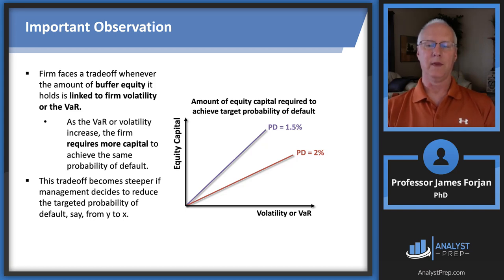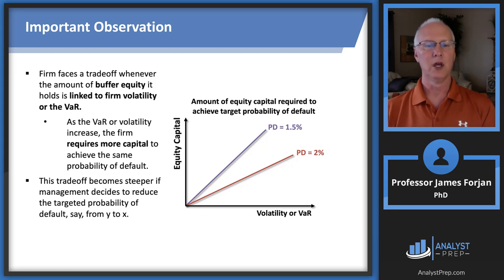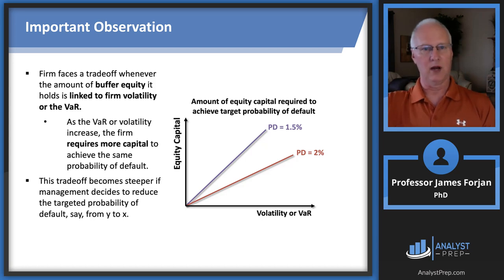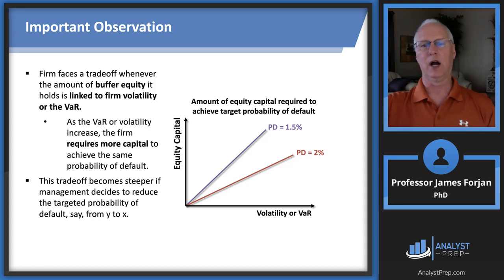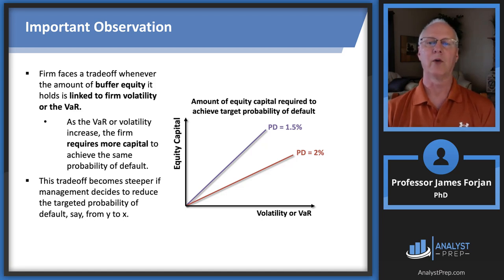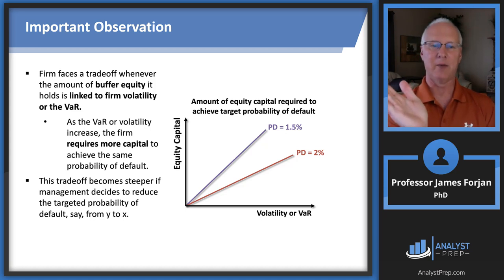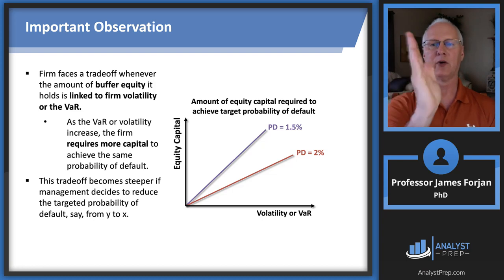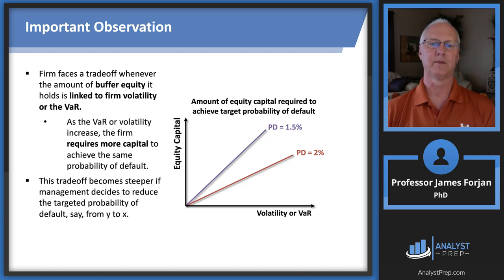This graph gives us the amount of equity capital required to achieve a target probability of default. Suppose we have a probability of default of 2% — as volatility increases, the red line goes up. If we want to reduce that probability of default to 1.5%, we need more buffer — more equity capital. And if we had a green line at a 1% probability of default, we'd need an even steeper slope in that relationship.